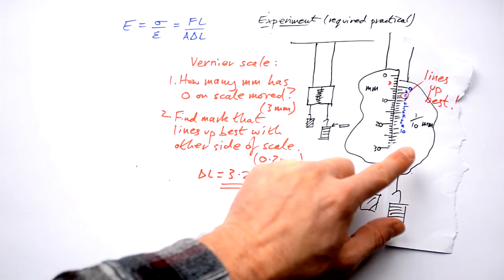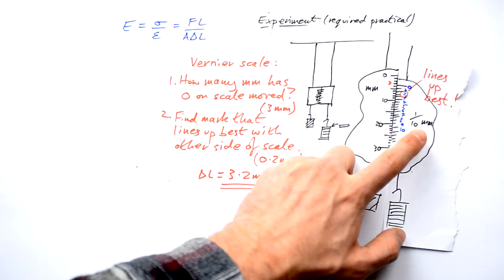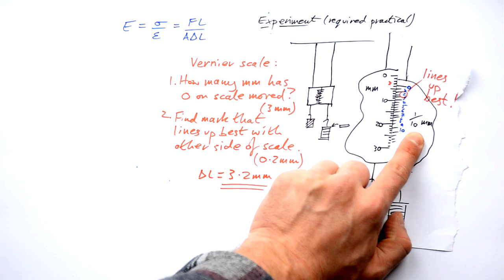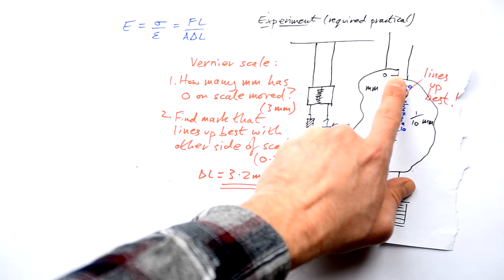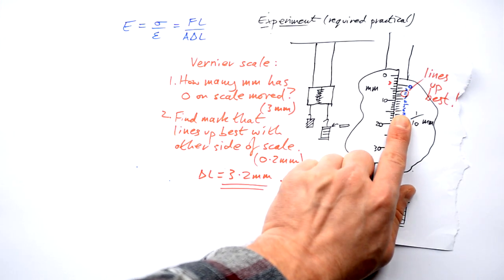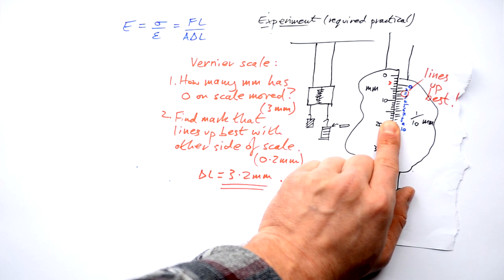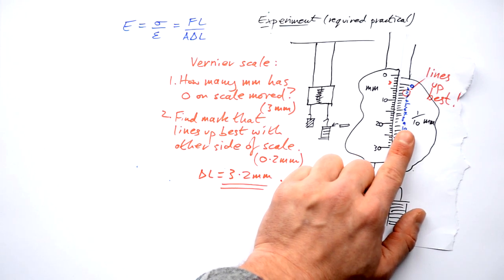That's what my extension is. And this is how any vernier scale works. They could have different resolutions. Usually the scale goes to millimeters. This is usually tenth of millimeters. Sometimes it goes to 20th of millimeters, so you can go to the nearest 0.05 millimeter. So just to recap, find out how many millimeters the zero has gone past for your millimeters and then find out which line lines up best with the other side on here to find out how many tenths of millimeters on top it's gone.